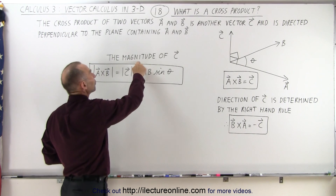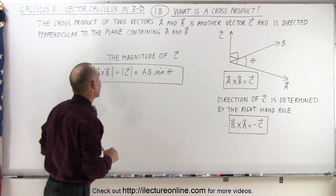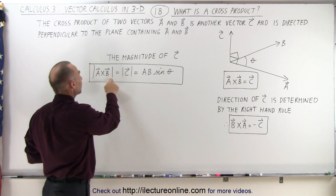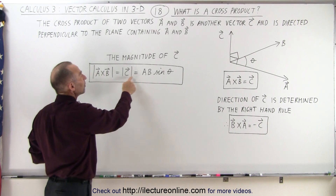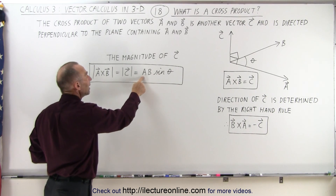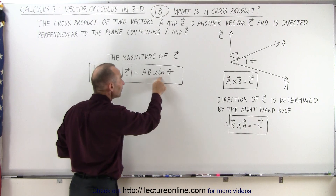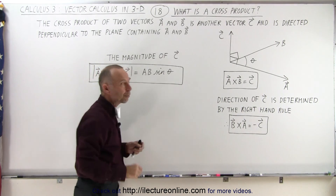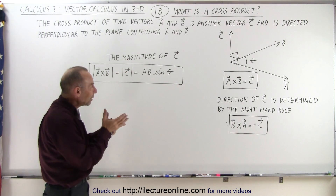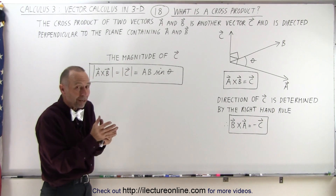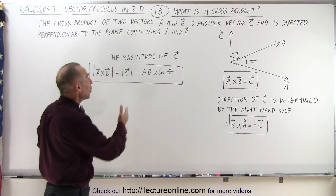The magnitude of the resultant C — the magnitude of A cross B — is simply the magnitude of A times the magnitude of B times the sine of the angle theta. Remember with the dot product, the magnitude of the dot product, which is also the dot product because it's a scalar quantity,